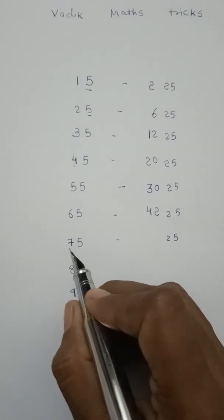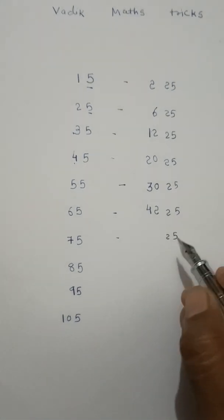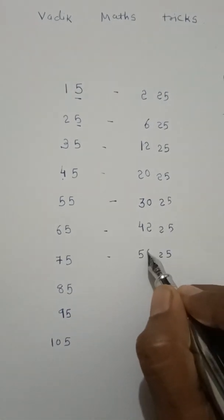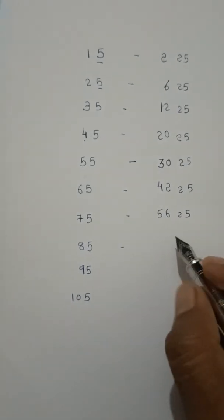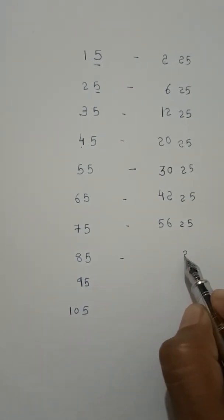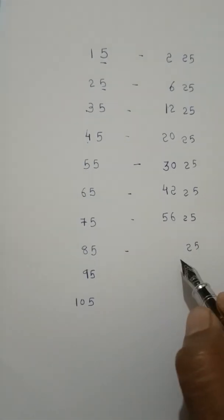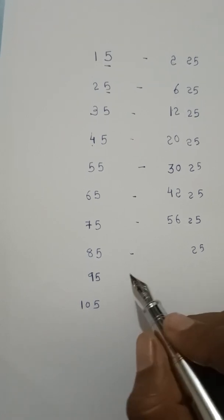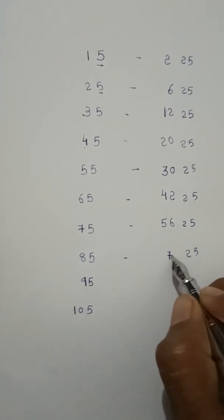25. Here the number is 7. Add 1: 8. Then 8 plus 1 is 9. So 8 into 9 is 72. Answer is 7225.